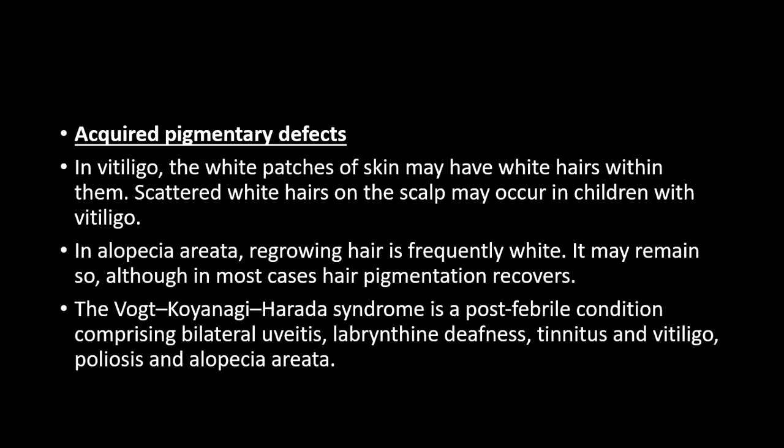Acquired pigment defects: in vitiligo, the white patches of skin have white hairs, and scattered white hairs on the scalp may occur in children with vitiligo. In alopecia areata, regrowing hairs are frequently white — this may remain so, although in most cases hair pigmentation recovers. Vogt-Koyanagi-Harada syndrome is a post-febrile condition comprising bilateral uveitis, labyrinthine deafness, tinnitus, vitiligo, poliosis, and alopecia areata.